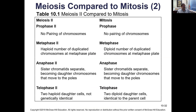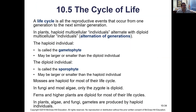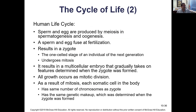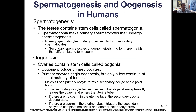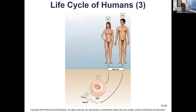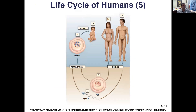Haploid structures are called gametophytes and diploid structures like the adult human are called sporophytes — same term applies to pine trees. We use spermatogenesis to make sperm and oogenesis to make eggs. In the human life cycle, the fertilized egg and sperm form a zygote, which grows into an adult — the circle of life continues.